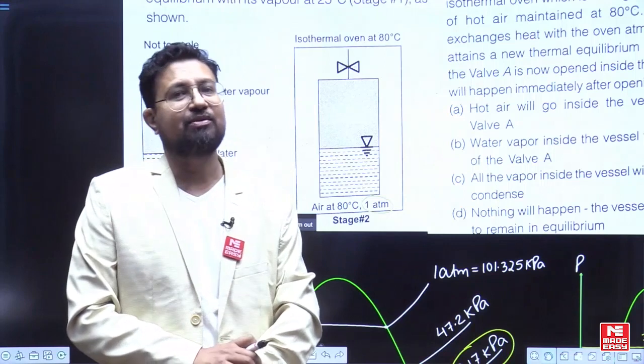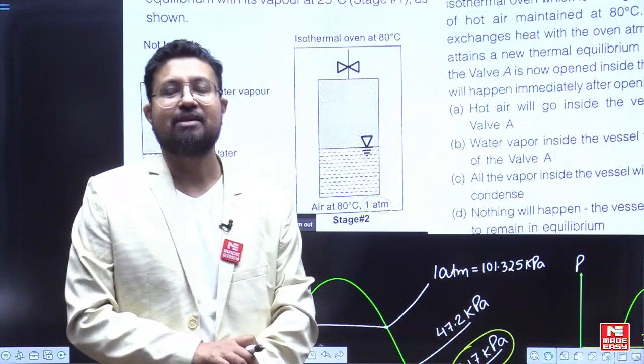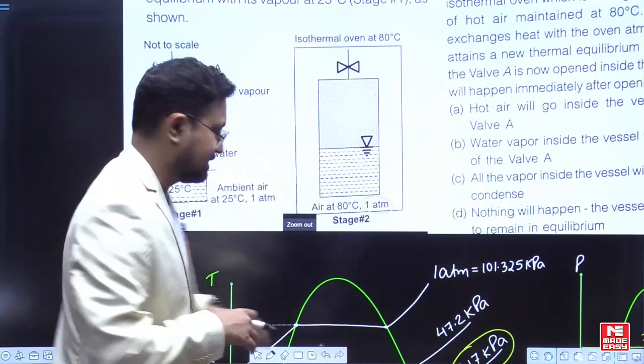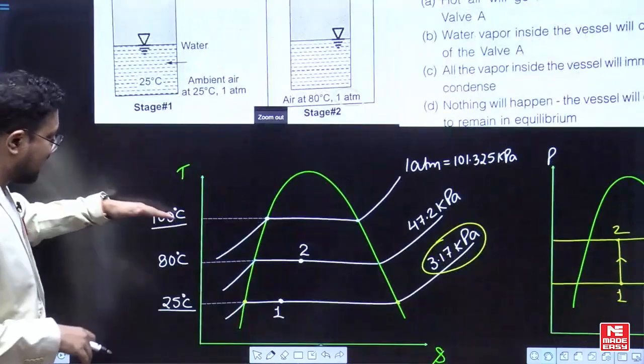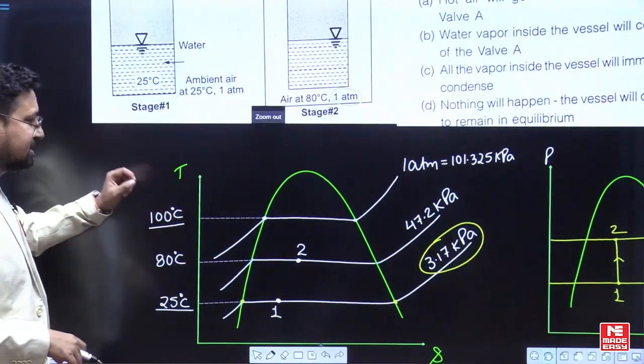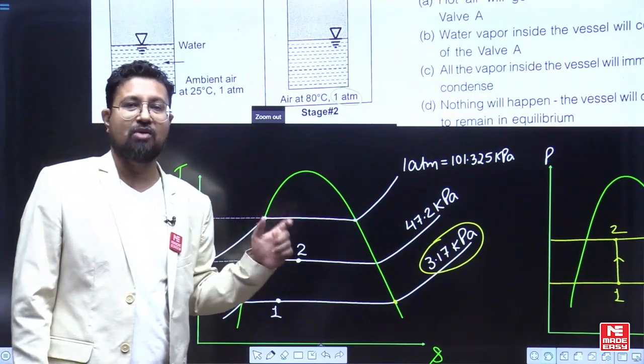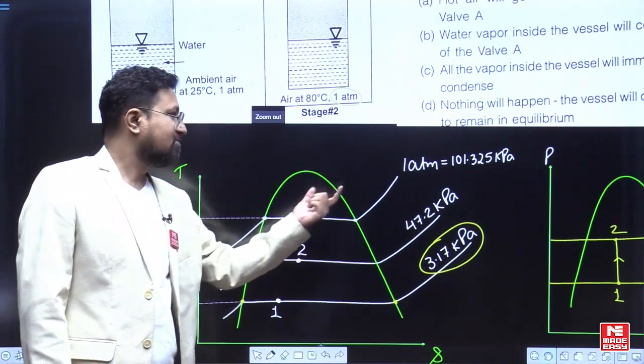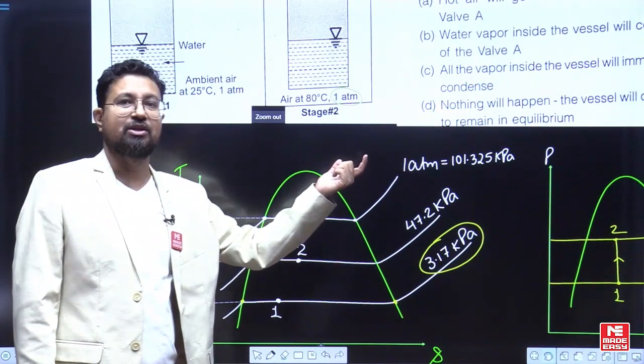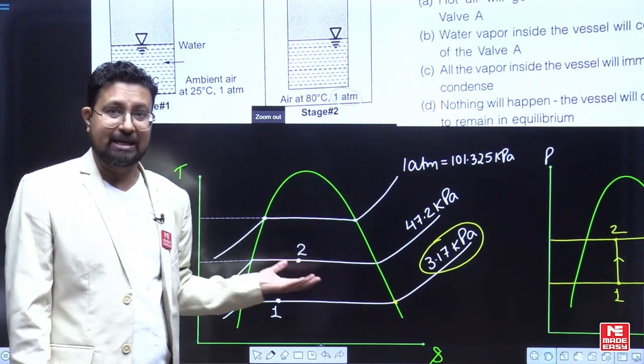Obviously, even if you do not know, it is less than what it will be for 100 degrees Celsius. So now at 100 degrees Celsius, we know the saturation pressure for 100 degrees Celsius. The saturation pressure of water vapor is one atmosphere, that is 101.325 kilopascal.